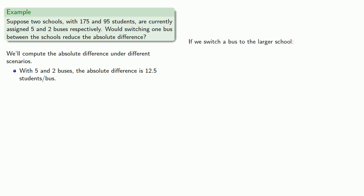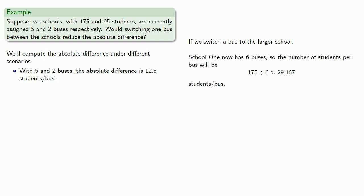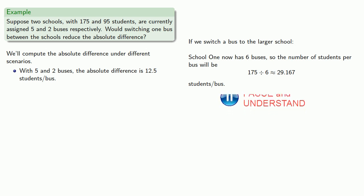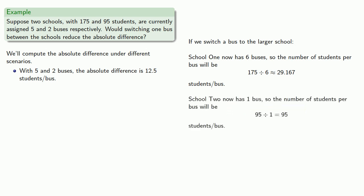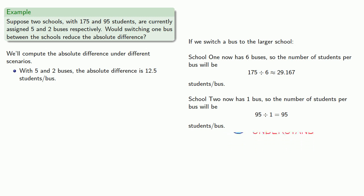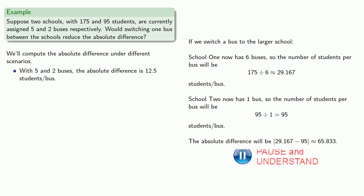If we switch a bus to the larger school, school one now has six buses, so the number of students per bus will be... Meanwhile, school two now has one bus, so the number of students per bus will be... And we find the absolute difference in students per bus will be...